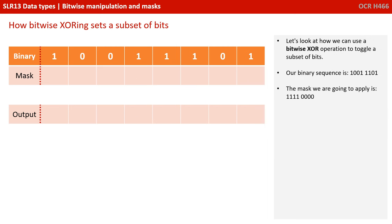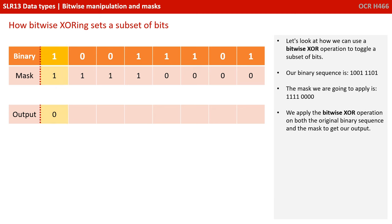Let's look at how we can use a bitwise XOR operation to toggle a subset of bits. Again, the same binary sequence and the same mask is applied. We're going to apply the bitwise XOR operation on both the original binary sequence and the mask. XOR stands for exclusive OR.